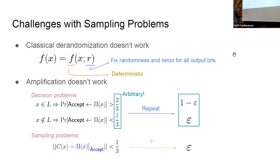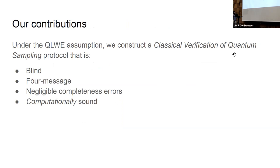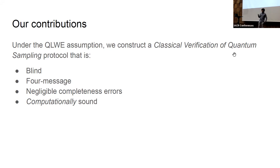Now let me state our main contribution. Under the QLWE assumption — that the learning-with-errors problem is hard for quantum computers — we construct a classical verification of quantum sampling protocol that is blind, so the prover learns nothing. It is constant round, with negligible completeness error and computational soundness, meaning the output of our protocol is computationally indistinguishable from the correct distribution.